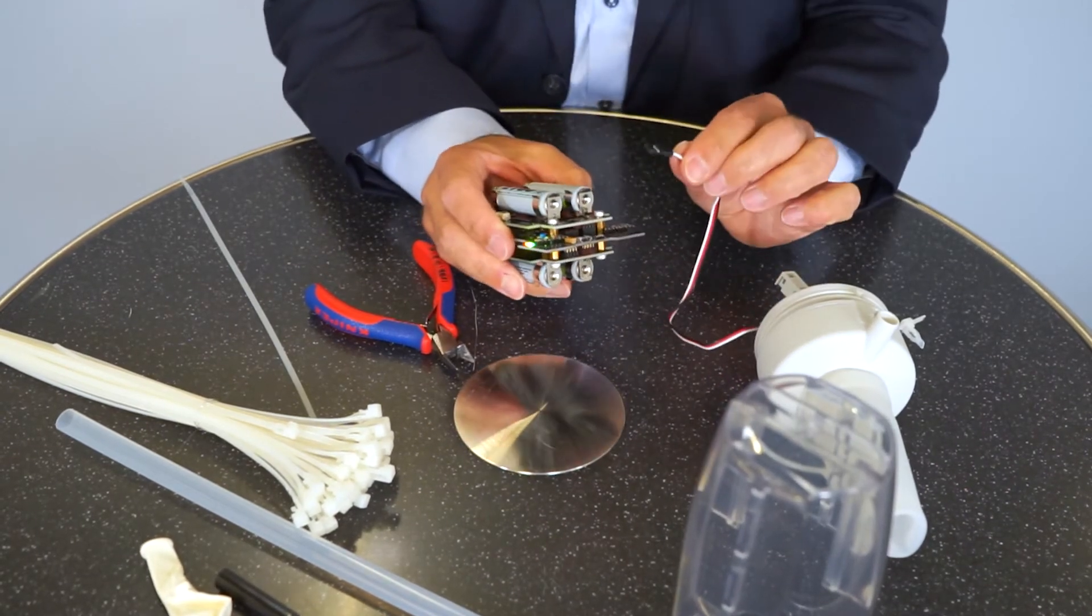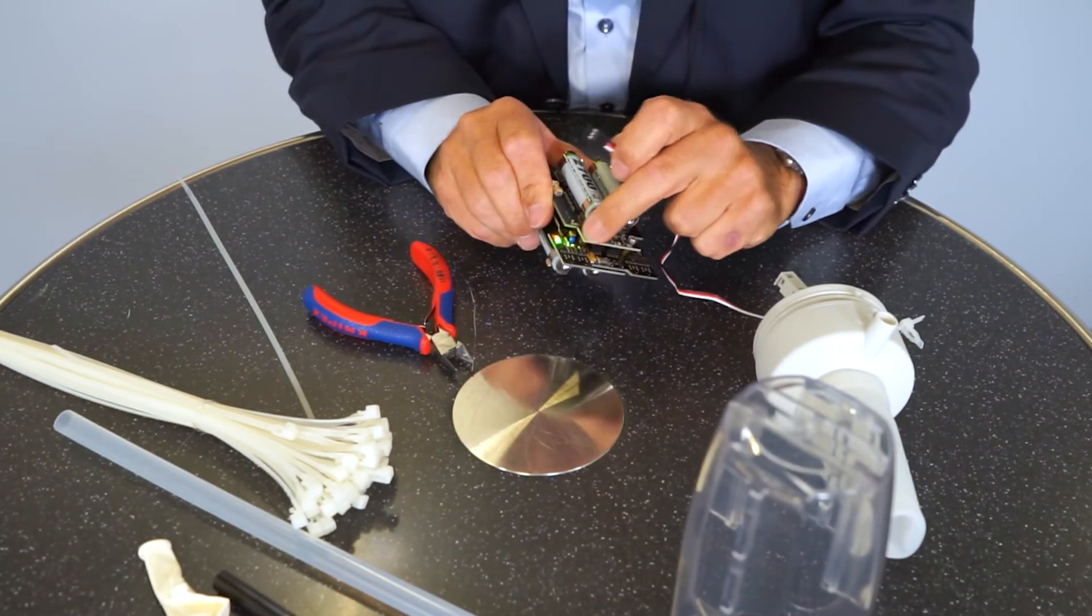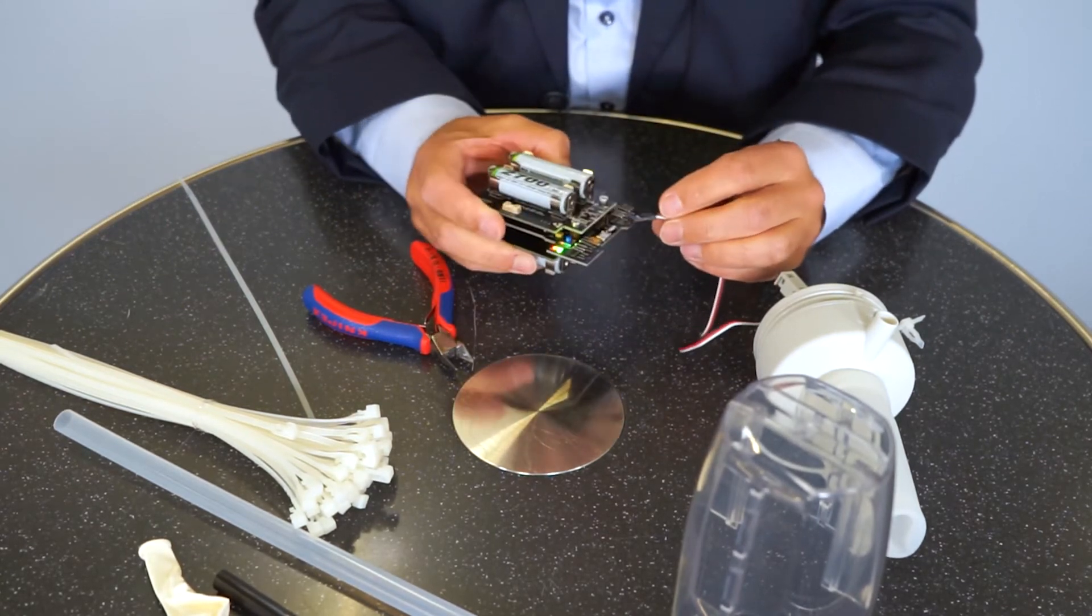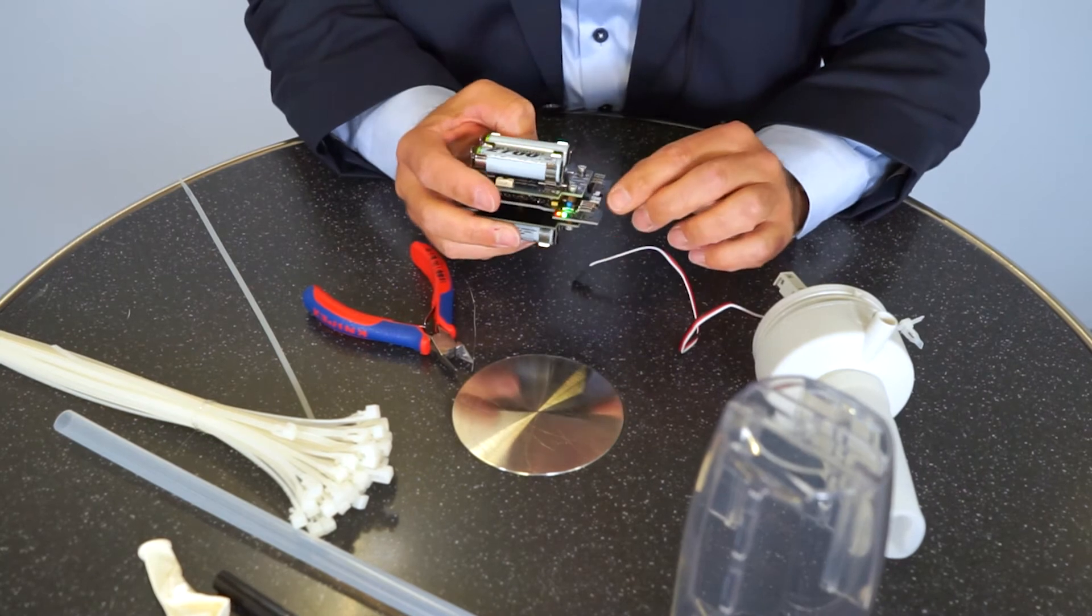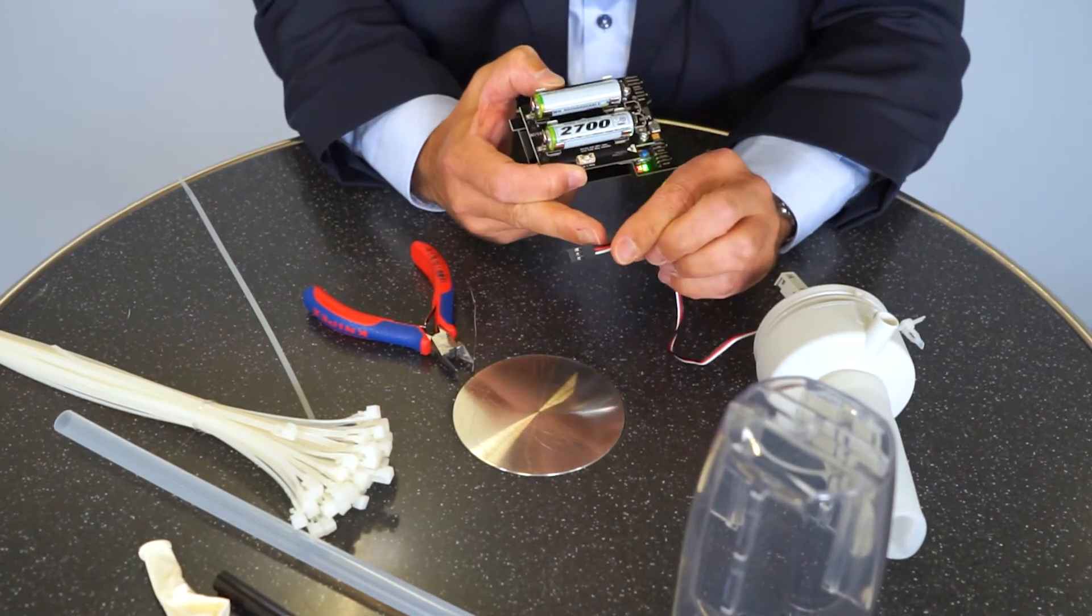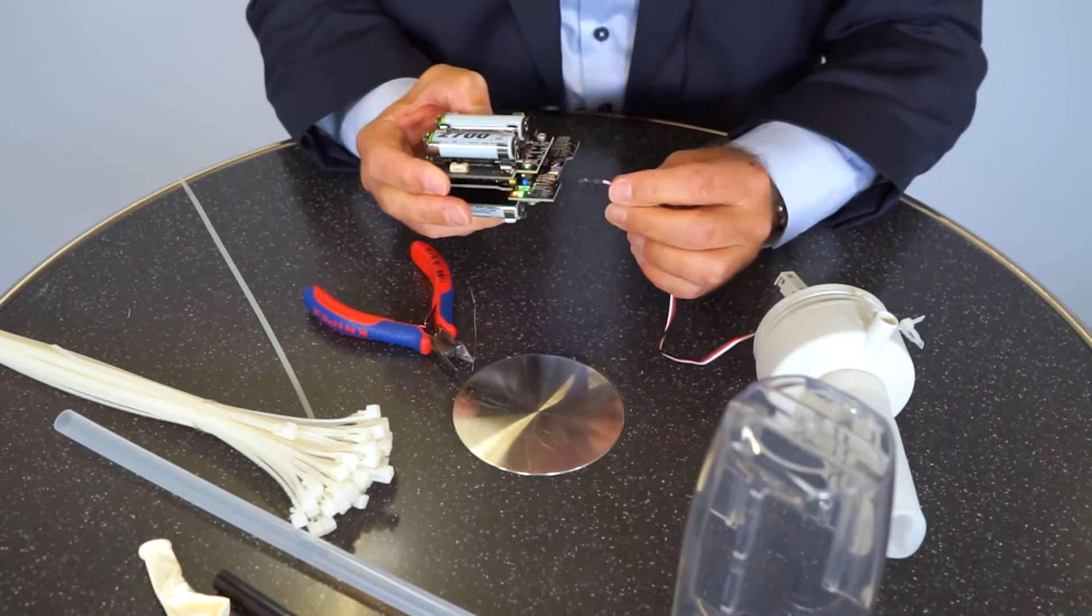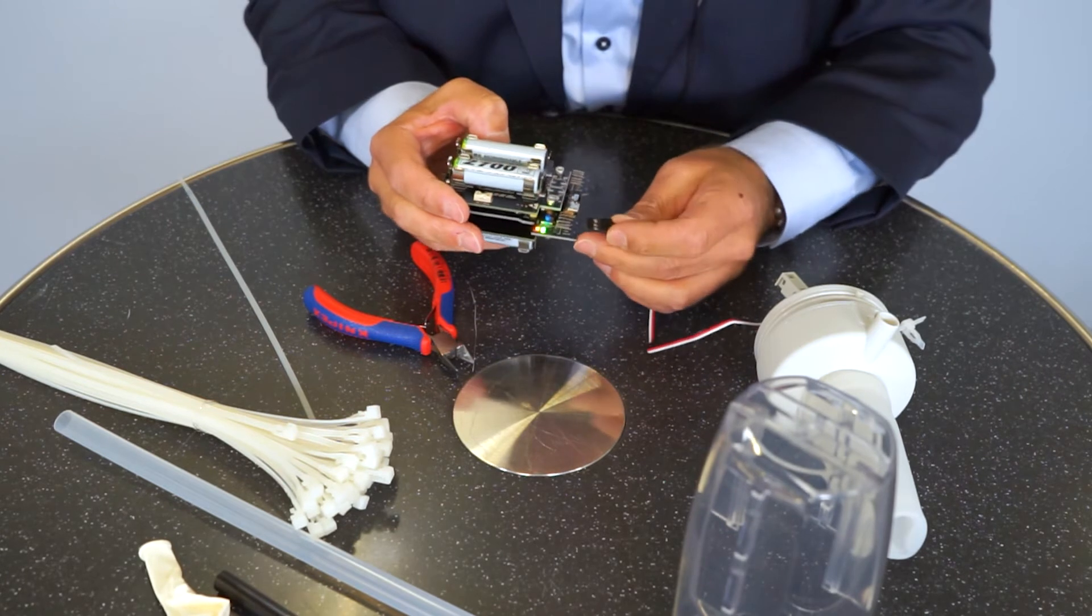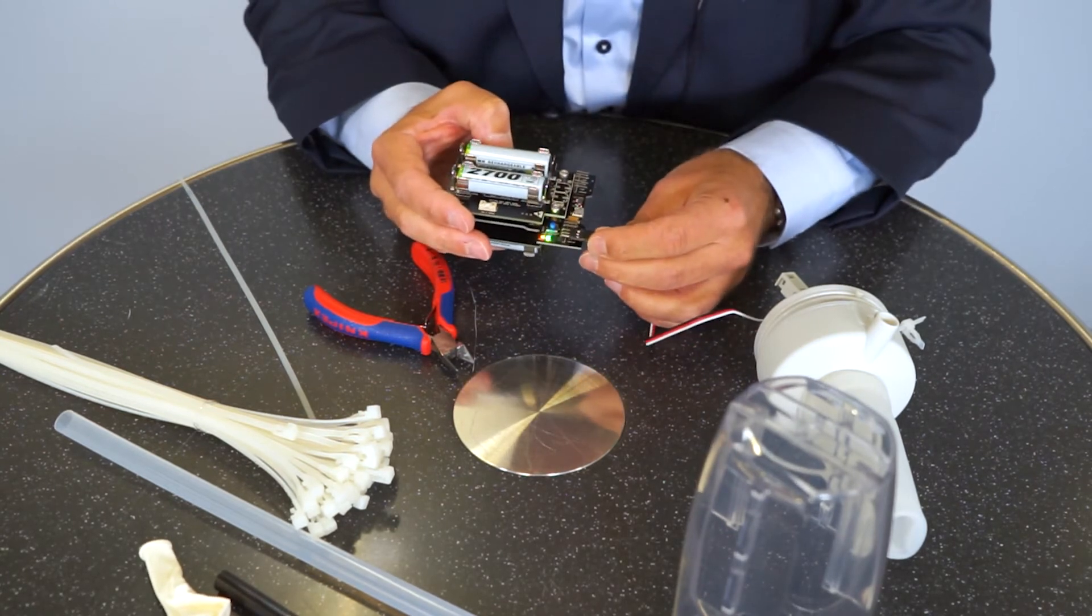And then you have to connect the servo with one of the outlet ports here. You can take every port you want. And make sure that the black cable of the servo is put on the pin with the label black, like I do it here now.